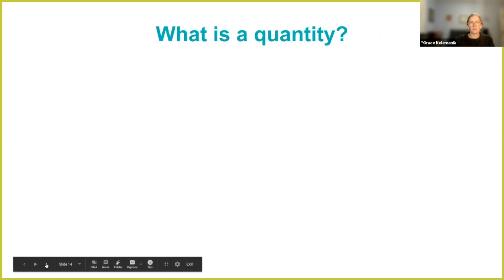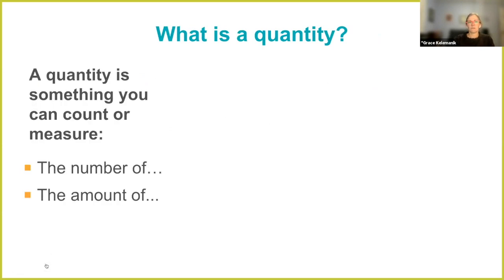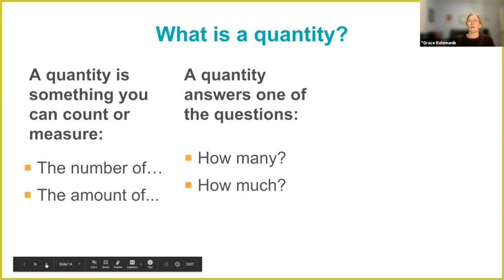So if a number isn't a quantity, what the heck is a quantity? A quantity is something that you can count or measure. We love to give students these two sentence starters: 'the number of' — if it's something you can count — or 'the amount of' — if it's something you can measure. I can count the number of cookies Grace has; I can measure the amount of distance Amy ran. That sentence starter will help students name quantities. A quantity answers the question 'how many' or 'how much.'